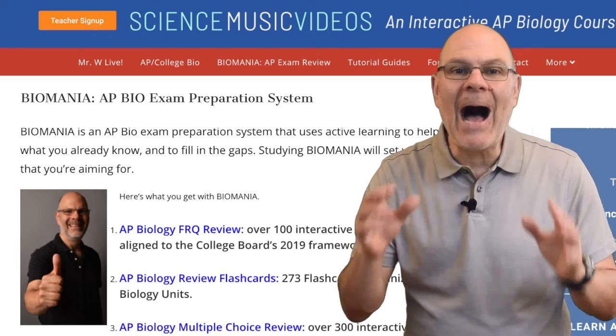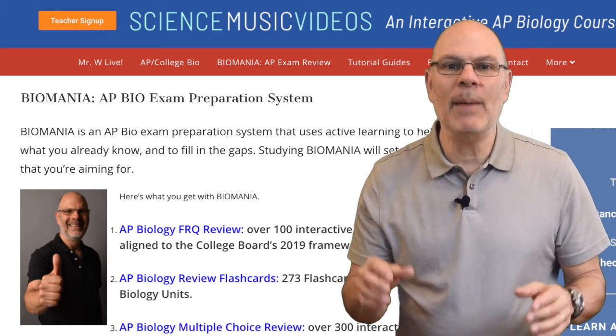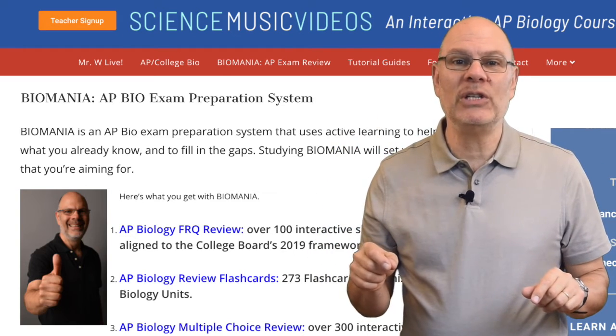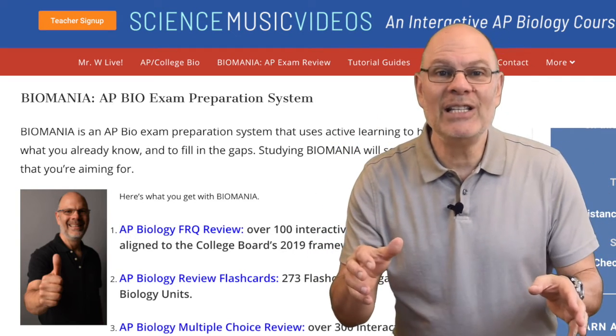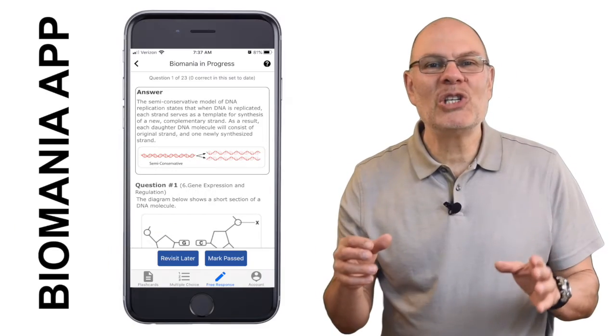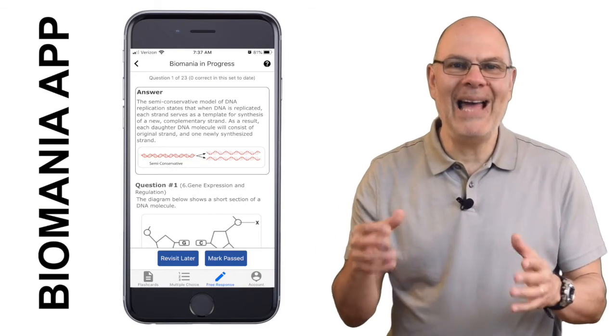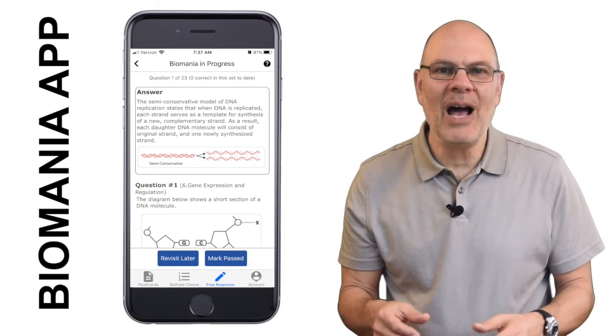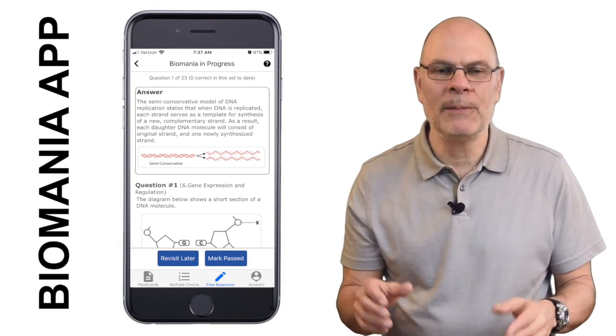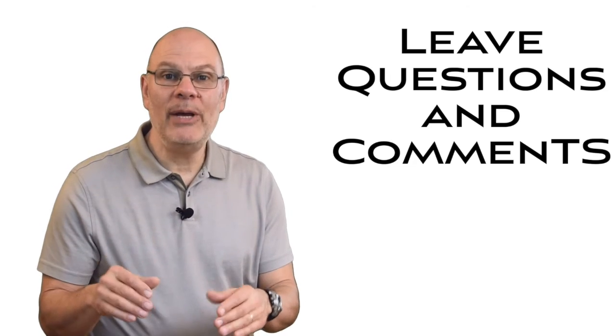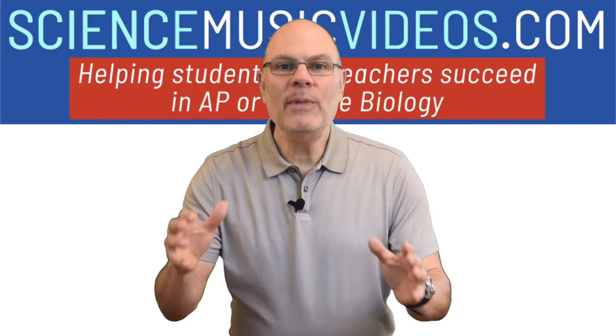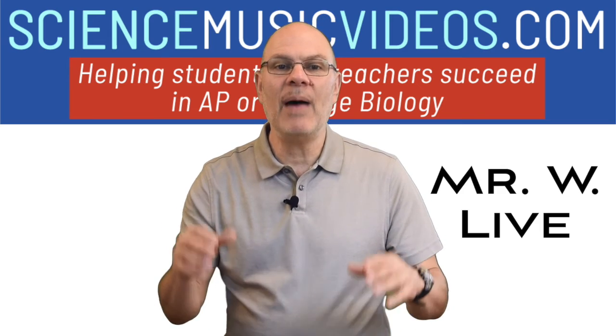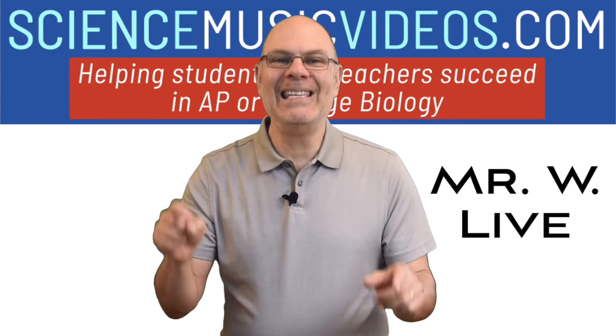And you can do this using the Biomania AP exam preparation system that'll get you a 4 or a 5 on this year's AP Bio exam. It's on ScienceMusicVideos.com, and it's also a phone app on Apple and Android. Download the app for free, and then you unlock all the content with an in-app purchase. If you have a question or a comment, please leave it below. Join me for live review sessions. The schedule is at ScienceMusicVideos.com at MrWLive.